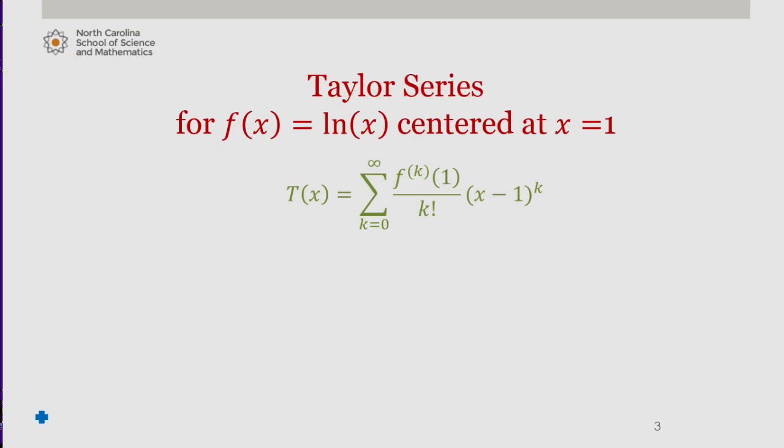We generate a few terms. We have 0 divided by 0 factorial times x minus 1 to the 0, plus